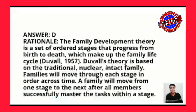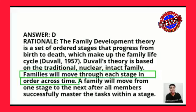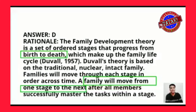The correct answer is letter D. Under family development theory, it is a set of ordered stages that progress from birth to death. According to Duval in 1957, Duval's theory is based on the traditional nuclear intact family — families will move through each stage in order across time. There are predictive stages from birth to death. A family moves from one stage to the next after all members successfully master the task within a stage. The correct answer is letter D, based on the family development theory.